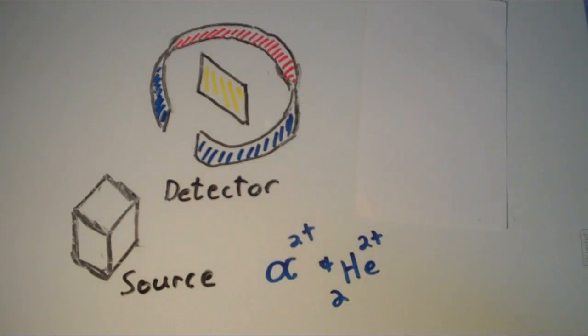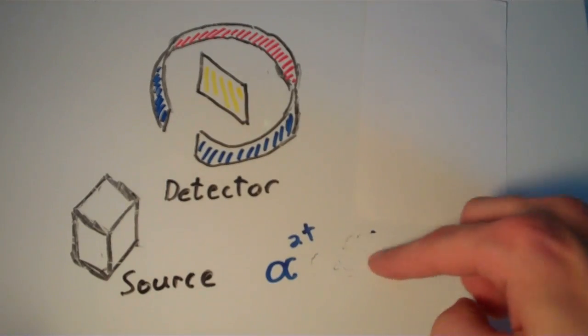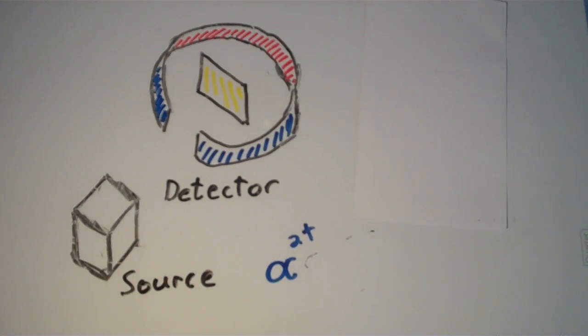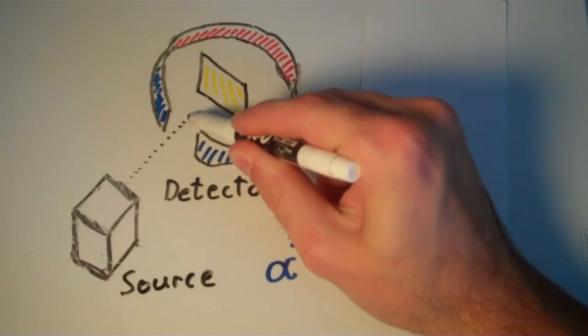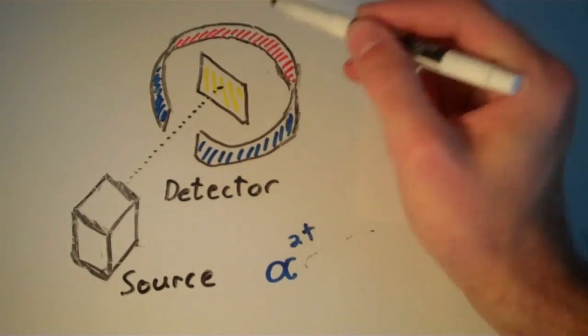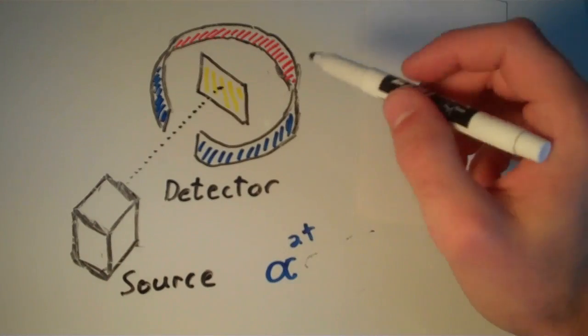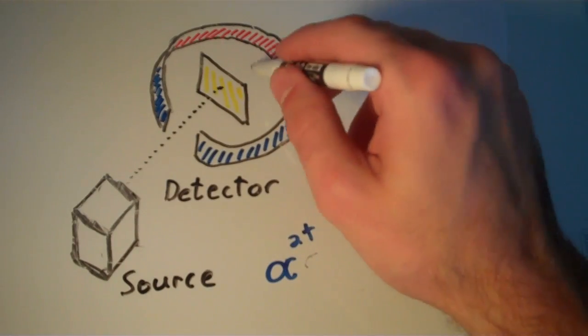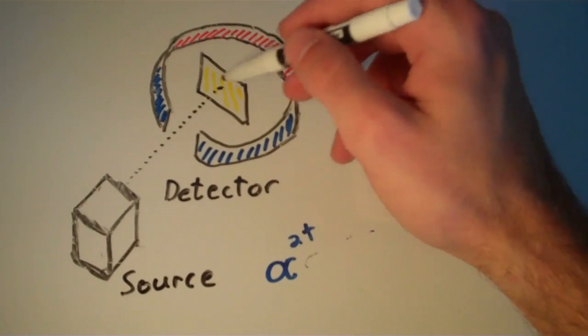All you need to know right now is that these alpha particles are positively charged. So the source shoots these alpha particles at the foil and the detector collects the signal as the alpha particles reach it.